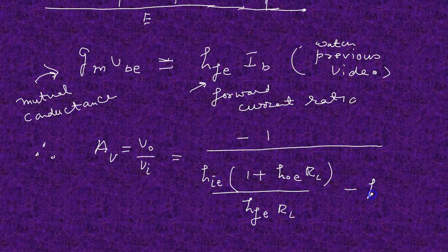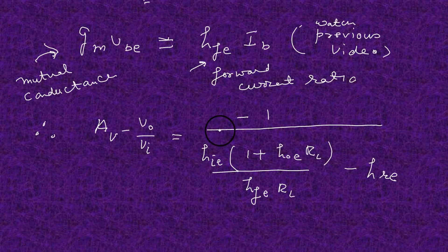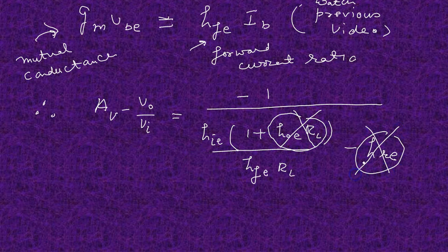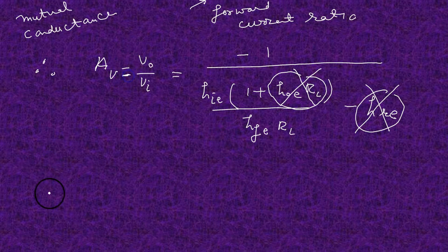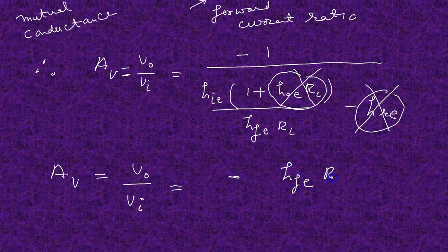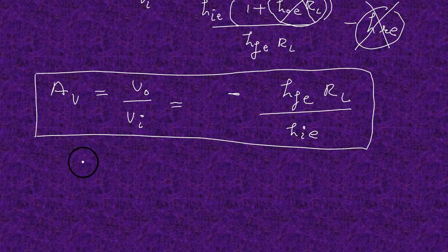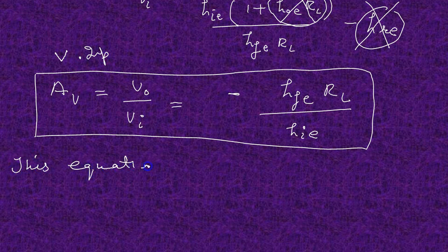This was the expression for voltage gain. Now neglecting HRE and the HOE term, this is the simplified expression for voltage gain. This is a very important expression and can be understood physically. The voltage gain depends upon HFE, HIE, and RL — they are the major factors.